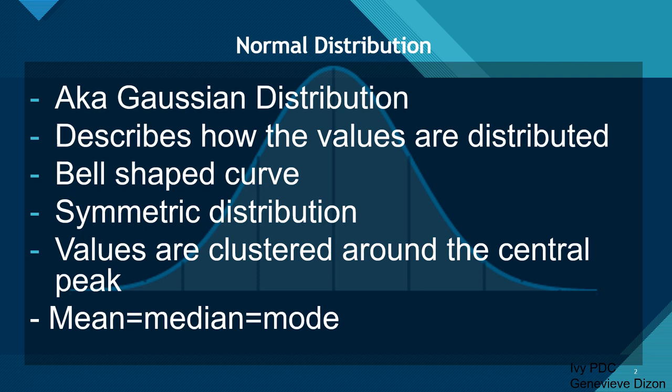Let's now discuss the normal distribution. Since we've been discussing dispersion — how values are spread out compared to the mean — when we say normal distribution, also known as the Gaussian distribution, this describes how the values are distributed. It gives a bell-shaped, symmetric curve, with values clustered around the central peak, giving a higher distribution in the center.